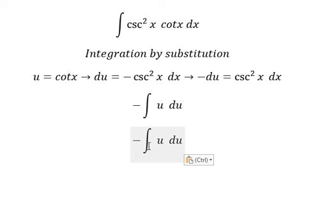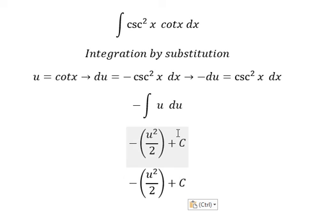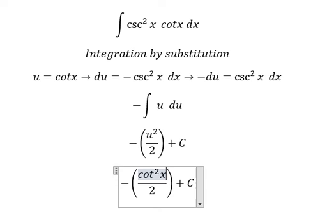The integration of u gives us u squared over 2, and we add the constant C. Substituting back, u is cotangent x. This is the end, thank you for watching.